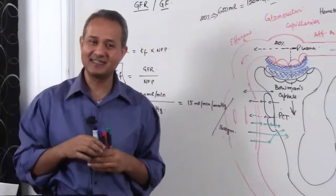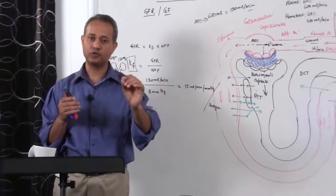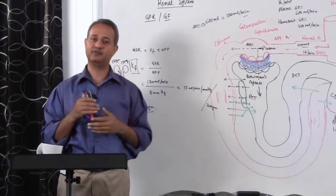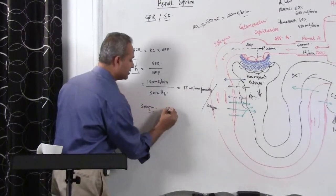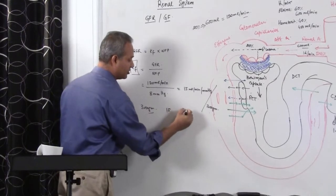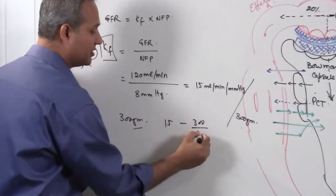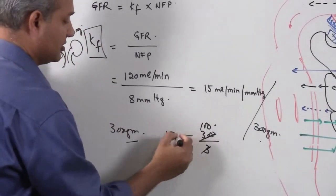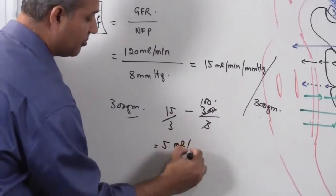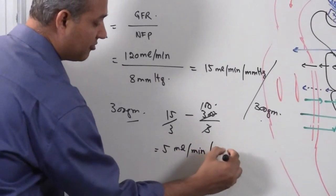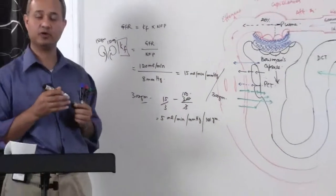Normally, nursing students, USMLE students, and doctors need to know the filtration coefficient per 100 grams of substance. If we have 15 for 300 grams, then for 100 grams it is 300 divided by 3, which gives us 5. So 5 milliliters per minute per millimeter of mercury per 100 grams of kidney substance is the filtration coefficient.